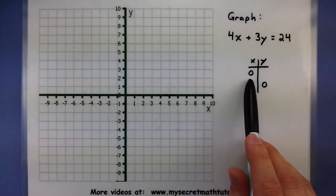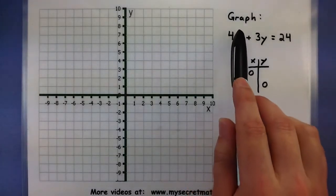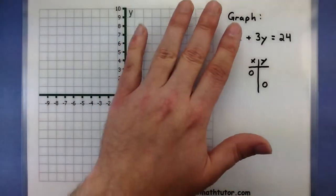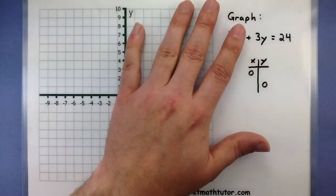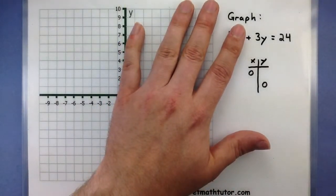Alright, so if you put in 0 for x into the equation, it's going to knock out this entire term. Now what that does is it simplifies the equation, and then you have something like this. 3y is equal to 24, and that can be solved fairly quickly.